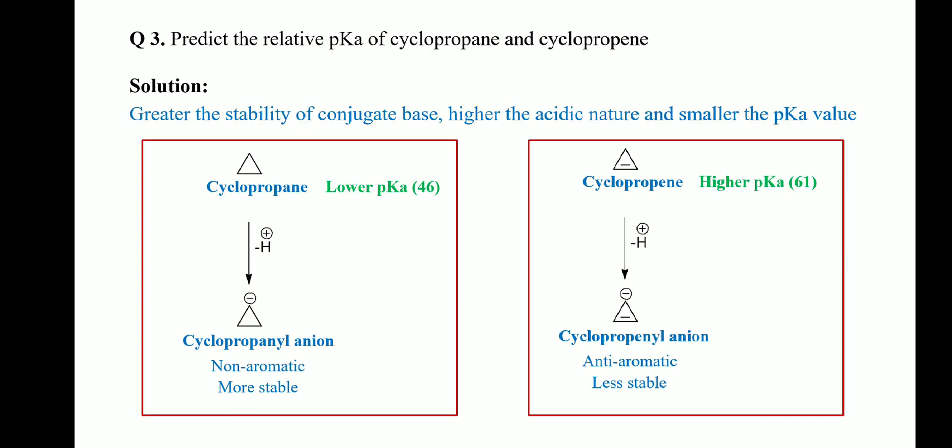Question 3: predict the relative pKa of cyclopropene and cyclopropene. The cyclopropenyl anion, the conjugate base of cyclopropene, is a non-aromatic species, while the cyclopropenyl anion conjugate base of cyclopropene is an anti-aromatic species. A non-aromatic species is more stable than an anti-aromatic species; therefore the conjugate base of the former is more stable, and consequently that cyclopropene will have a lower pKa.